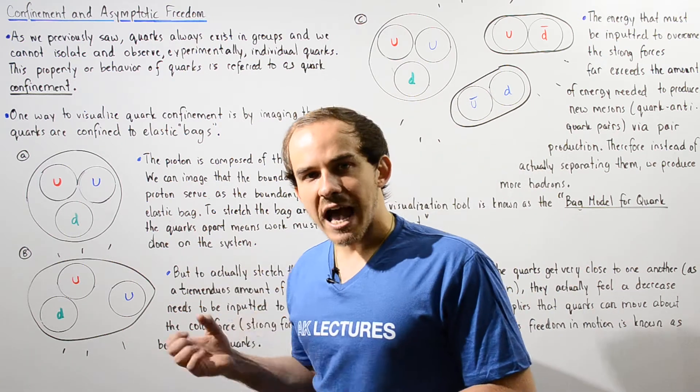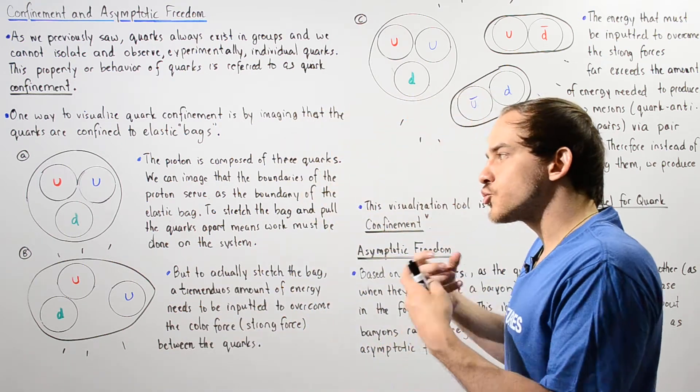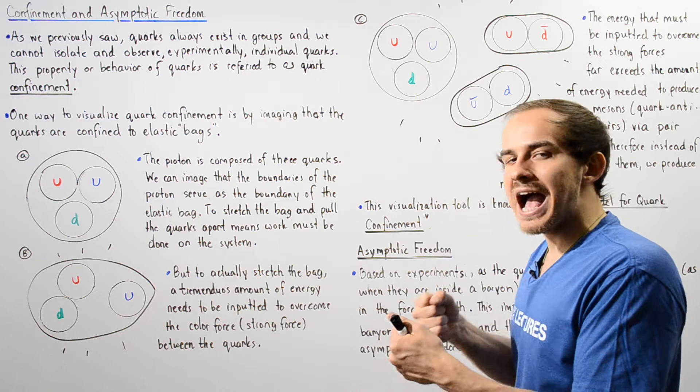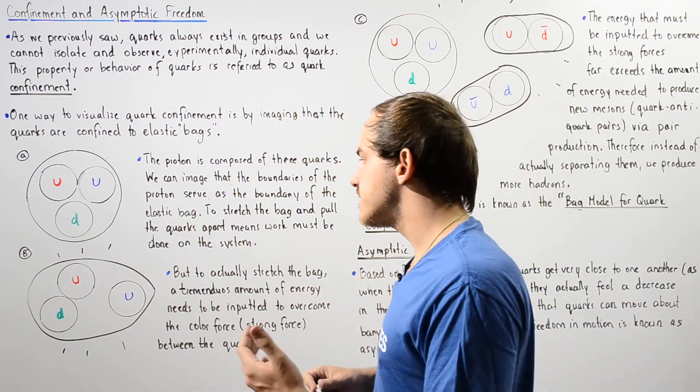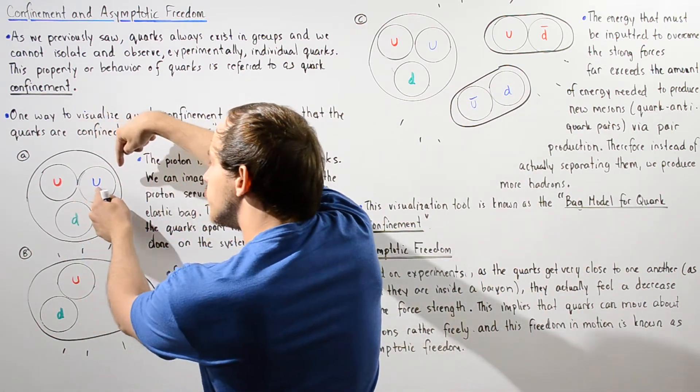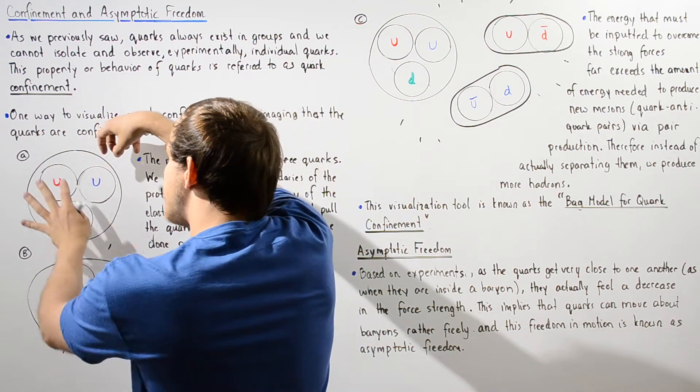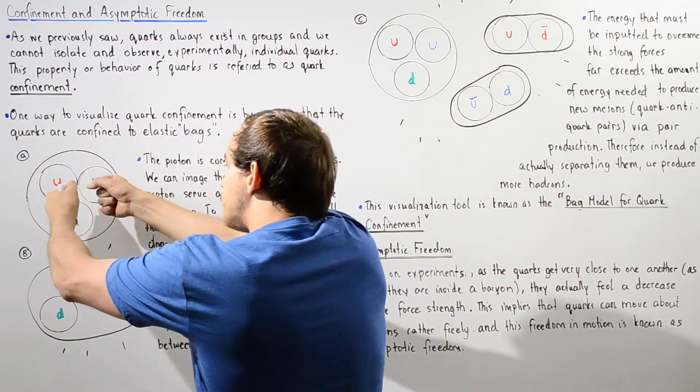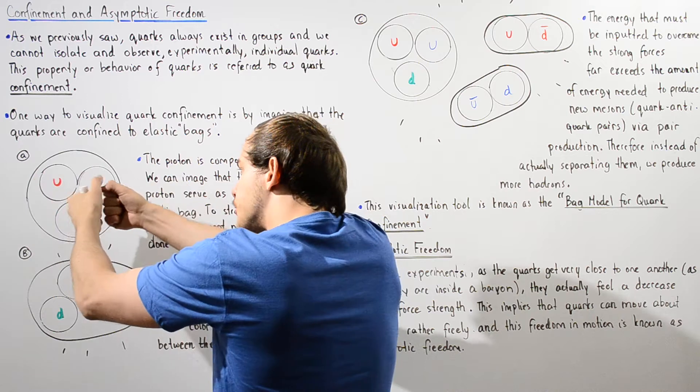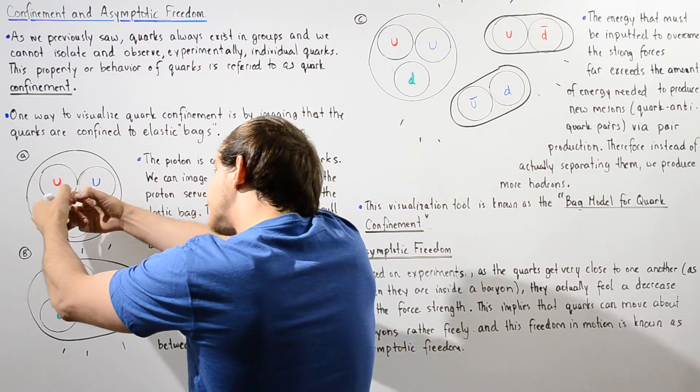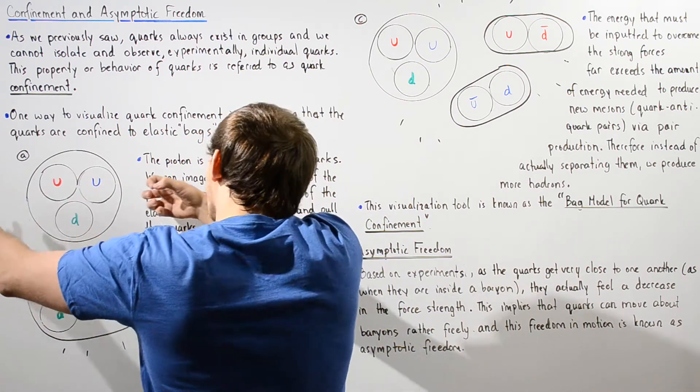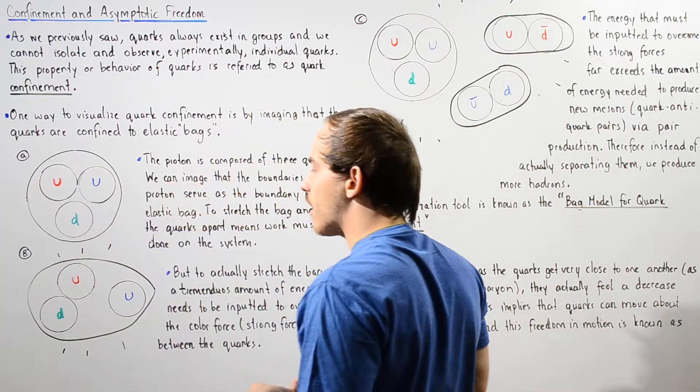Now, let's suppose we try to separate our quarks from one another. Let's say we want to separate this blue up quark from these other two quarks. We try to actually input a certain amount of energy, to do work on our system to separate our quarks.